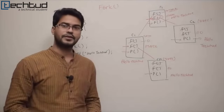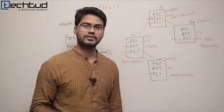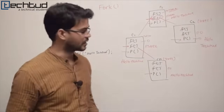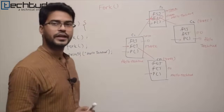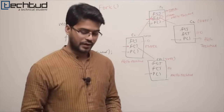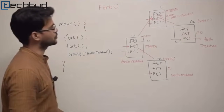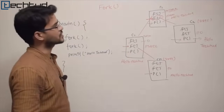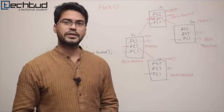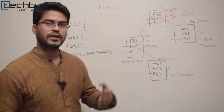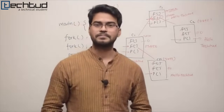You can use this to check whether the currently executing process is the parent or the child. Simply apply an if-condition: if the return value is greater than zero, it's the parent; if it's zero, it's the child. In the next video, we will take another example and use this condition to figure out how many times the print runs. Thanks for watching.